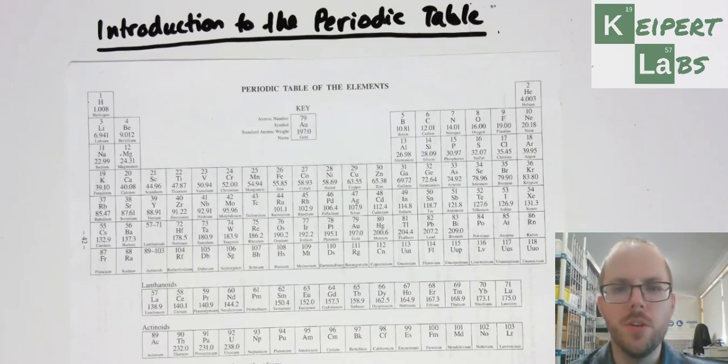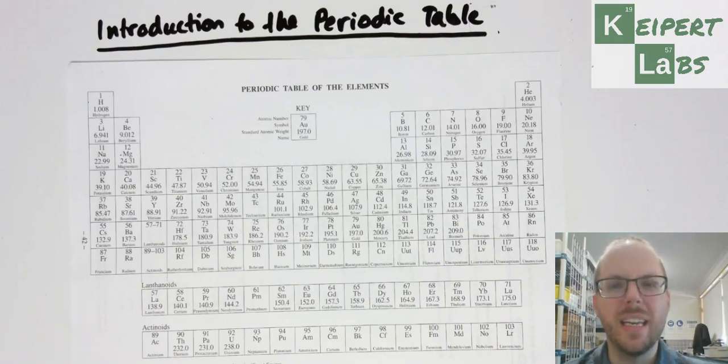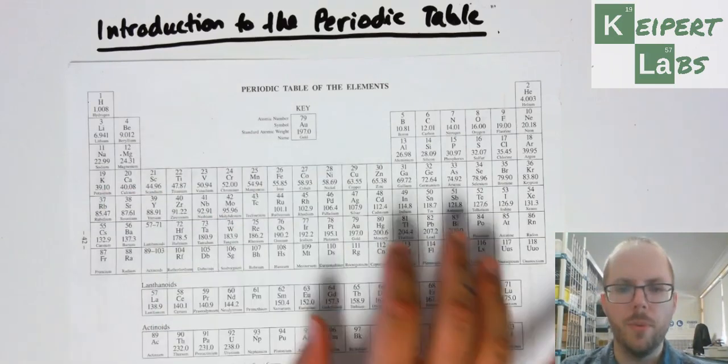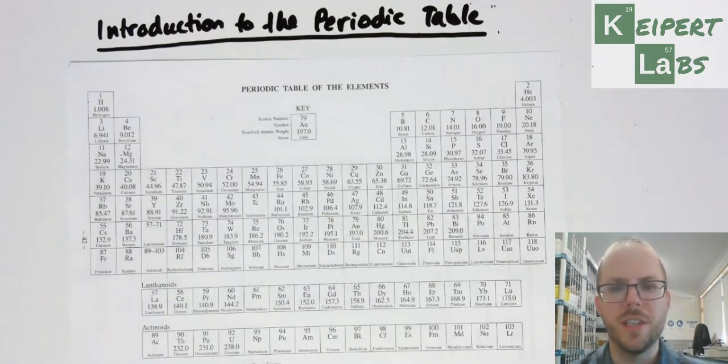I'll talk you through a little bit about how we use it as a reference tool in chemistry and what some of the information is that we can get from it. I'm going to be using a whiteboard here and illustrating around this periodic table that you can see on your screen.